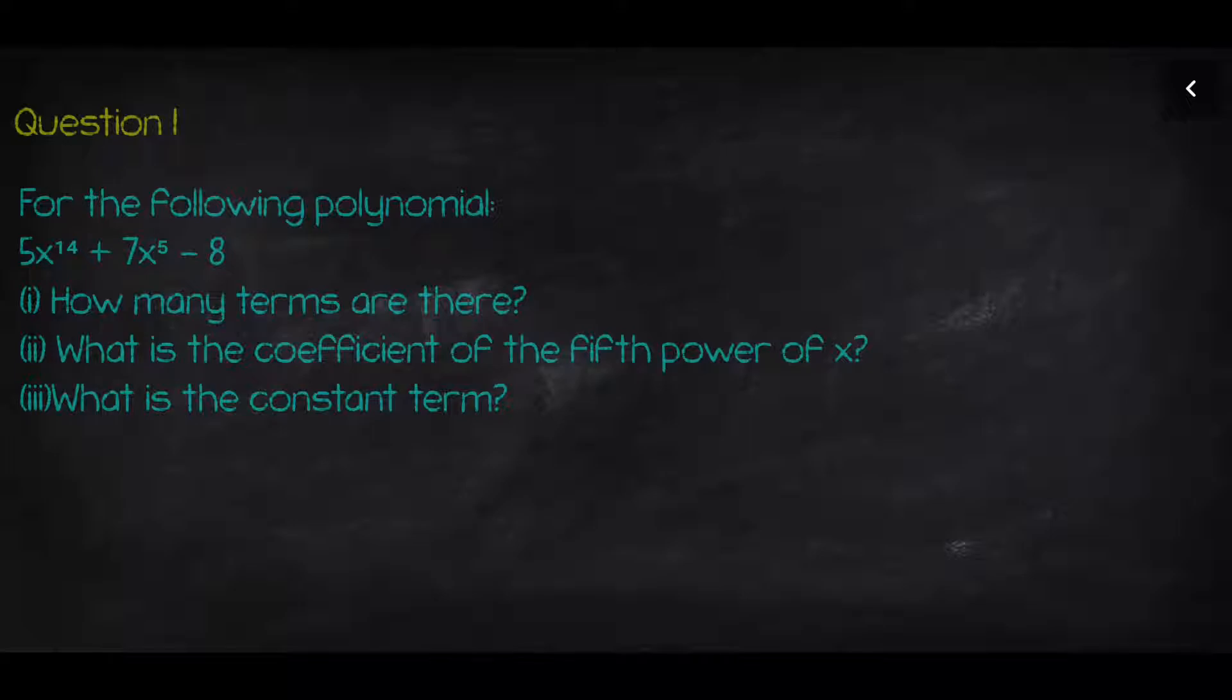So, question one. For the following polynomial that you can see here, you need to find how many terms are there. Alright, so terms. Basically, each separate thing that you can see here is called a term, basically the element.